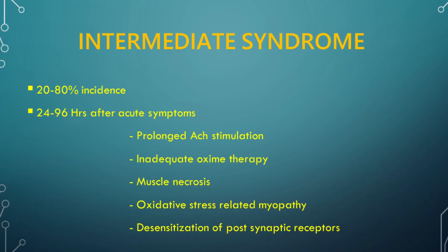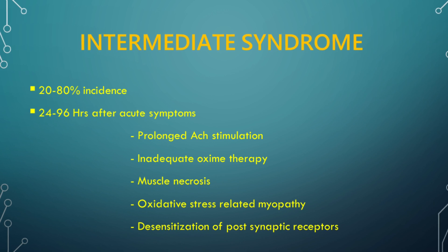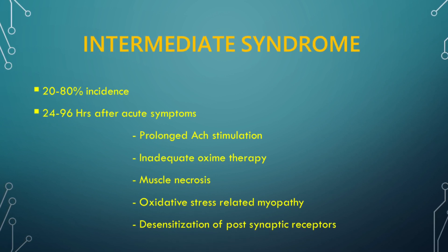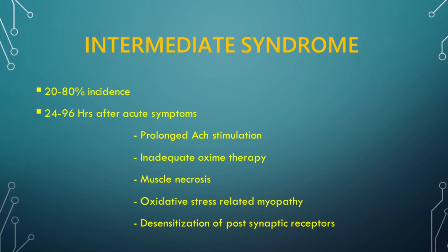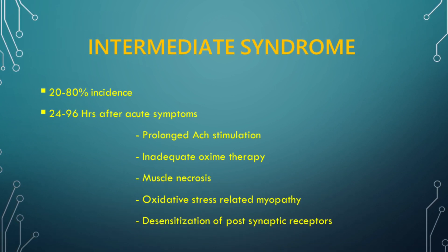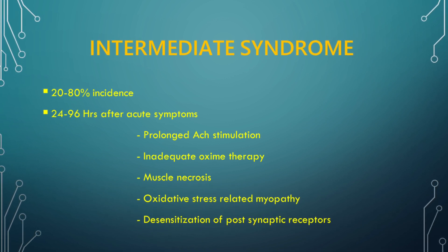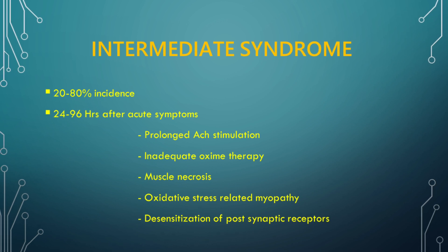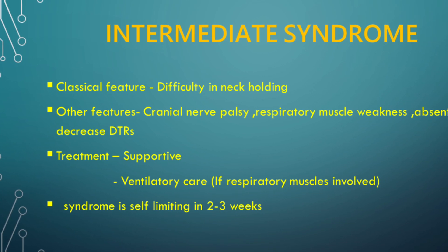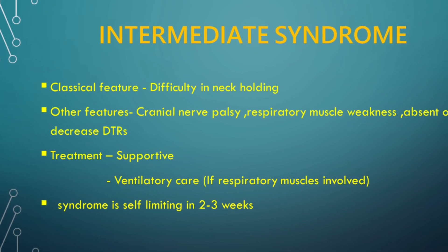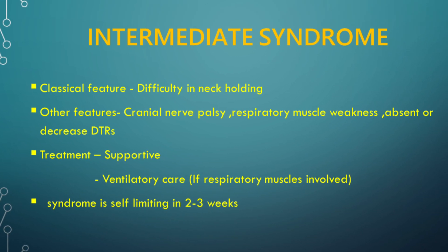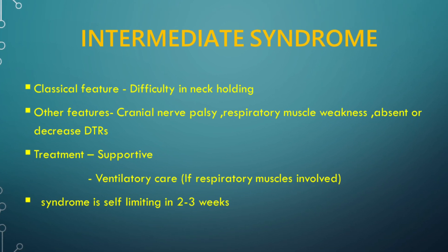Intermediate syndrome accounts for 20–80% incidence and usually develops 24–96 hours after resolution of acute symptoms of OP poisoning. Causes may include prolonged acetylcholinesterase stimulation, partial or inadequate oxime therapy, muscle necrosis, oxidative stress-related myopathy, or desensitization of post-synaptic nicotinic receptors. Classical features are sudden onset of neuromuscular weakness characterized by difficulty in neck holding. Other features include cranial nerve palsies, respiratory muscle weakness, and decreased or absent deep tendon reflexes. Treatment is mainly supportive; if respiratory muscles are involved, the patient may require mechanical ventilation and good nursing care.